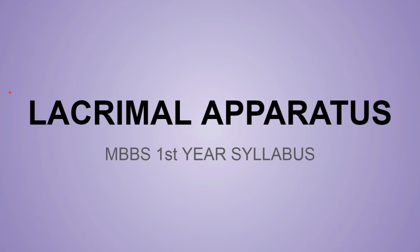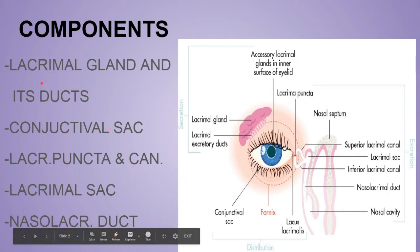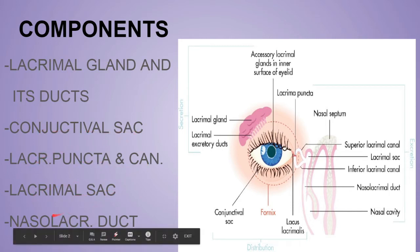Hello everyone, today we will discuss the lacrimal apparatus of the head and neck. There are five components that constitute the lacrimal apparatus: the lacrimal gland and its ducts, conjunctival sac, lacrimal puncta and canaliculi, lacrimal sac, and the nasolacrimal duct. All these five components together form the lacrimal apparatus.